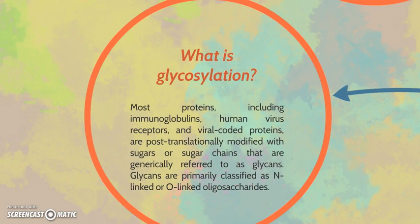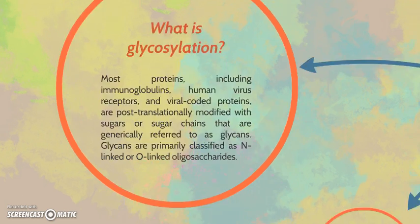What is glycosylation? Most proteins, including immunoglobulins, human virus receptors, and viral coat proteins, are post-translationally modified with sugar or sugar chains that are generally referred to as glycans. Glycans are primarily classified as N-linked or O-linked oligosaccharides.